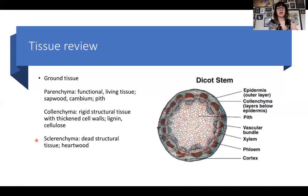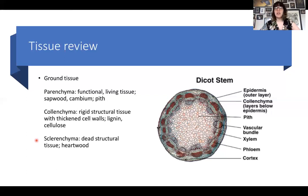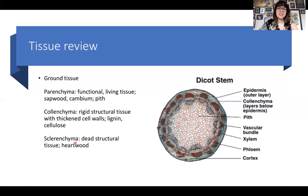Sclerenchyma is similar in some ways to colenchyma — it's there for structural support — but these are dead tissue cells that were part of the plant but are no longer living or providing active metabolic resources. This is analogous to what we learned last time: the heartwood — that dead internal cell structure at the core of the tree. If we wanted to be specific scientists, we would call that sclerenchyma.